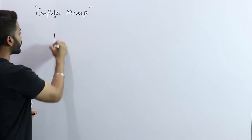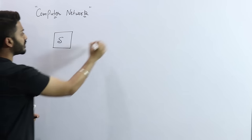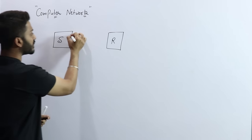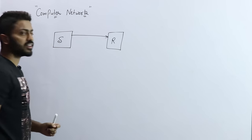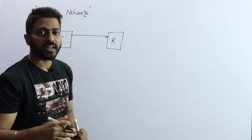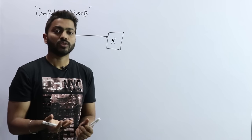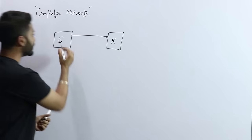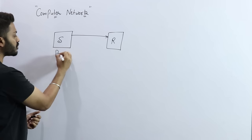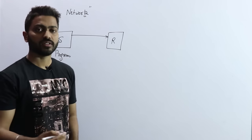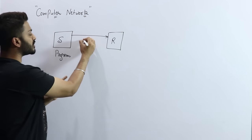In a computer network we have one sender and one receiver. The sender is trying to send some data to the receiver. Sender and receiver can be a machine or a user — a user sends data through a machine. So we can say the sender is writing a program to send some data to the receiver.